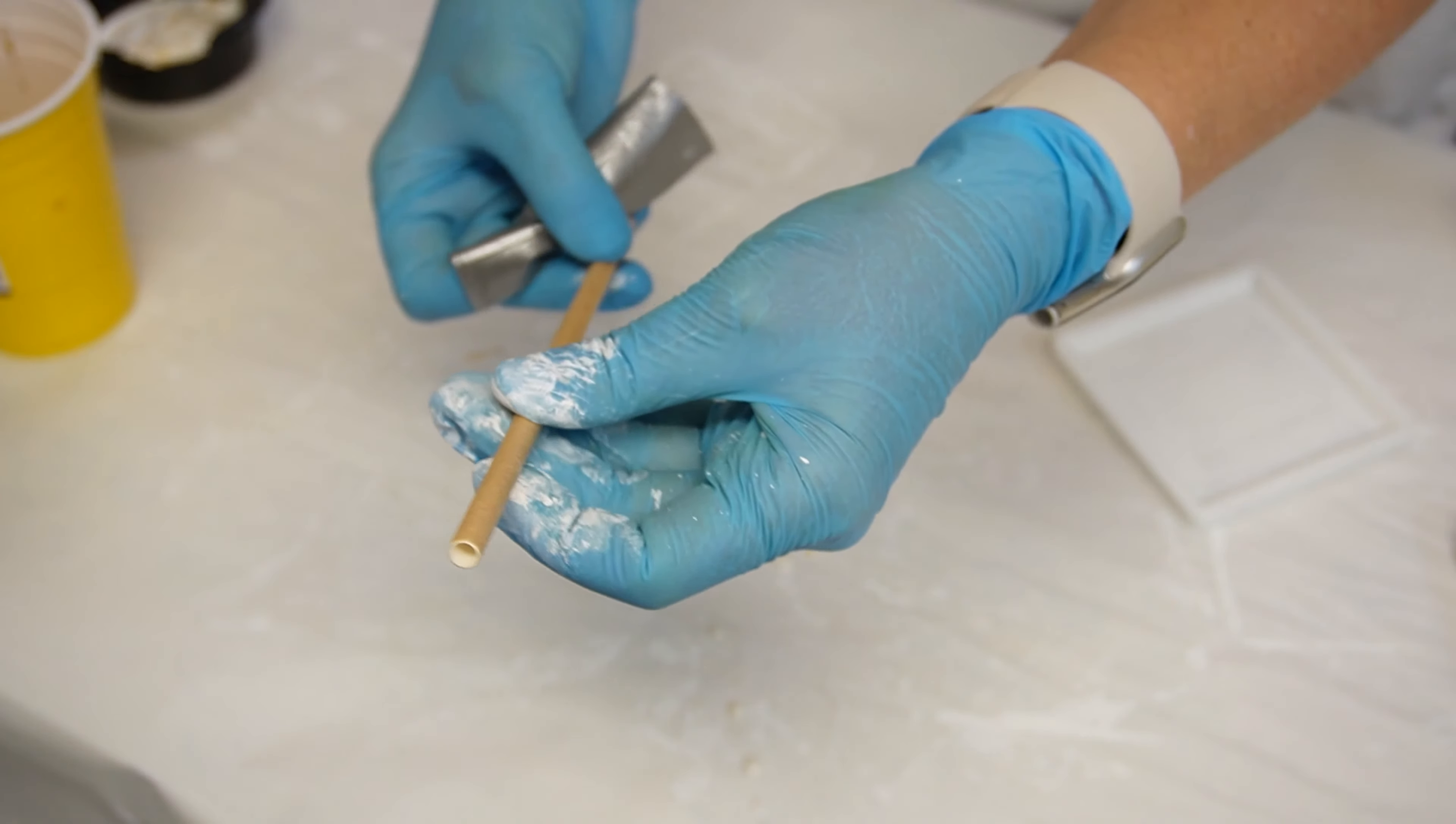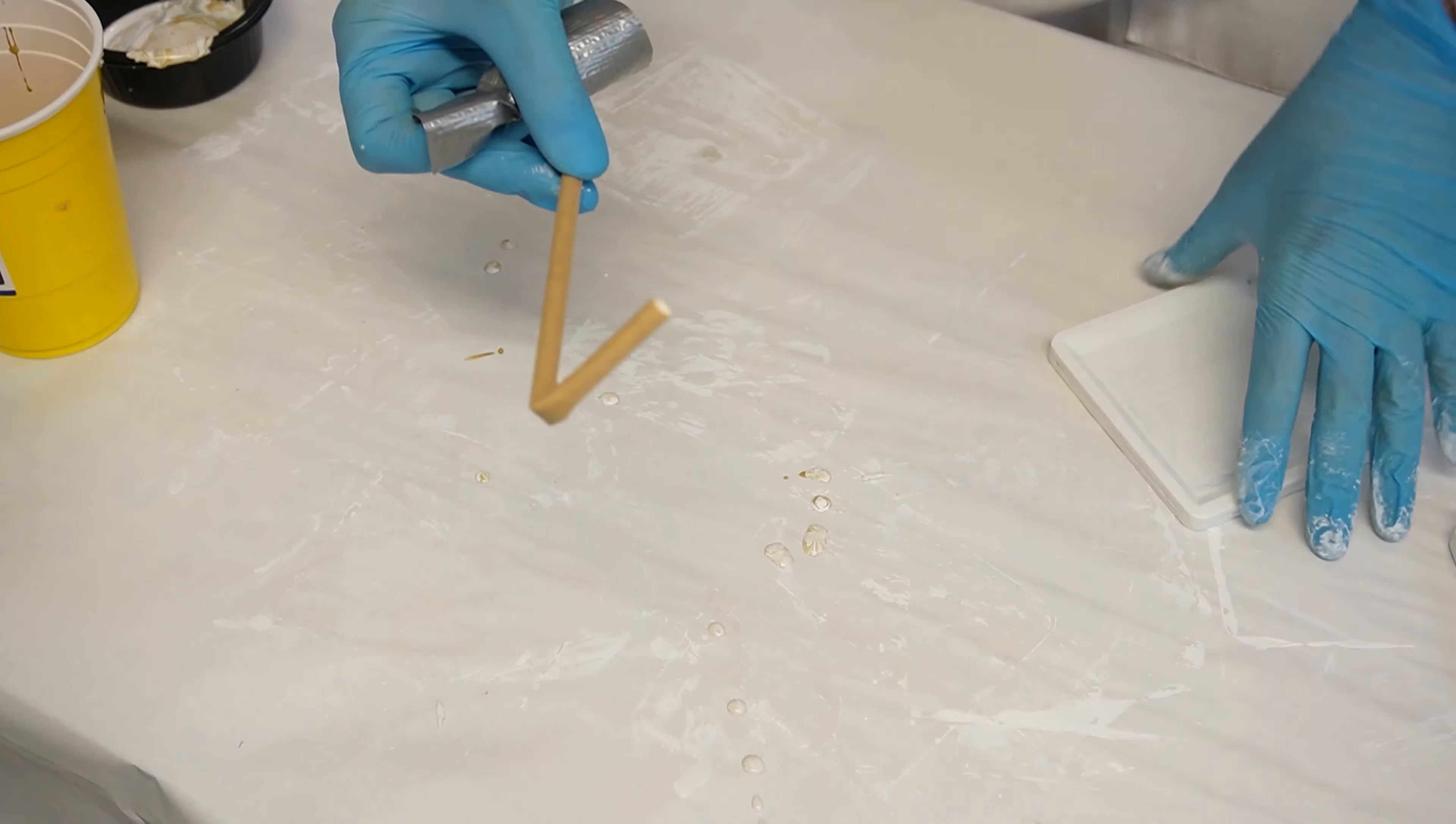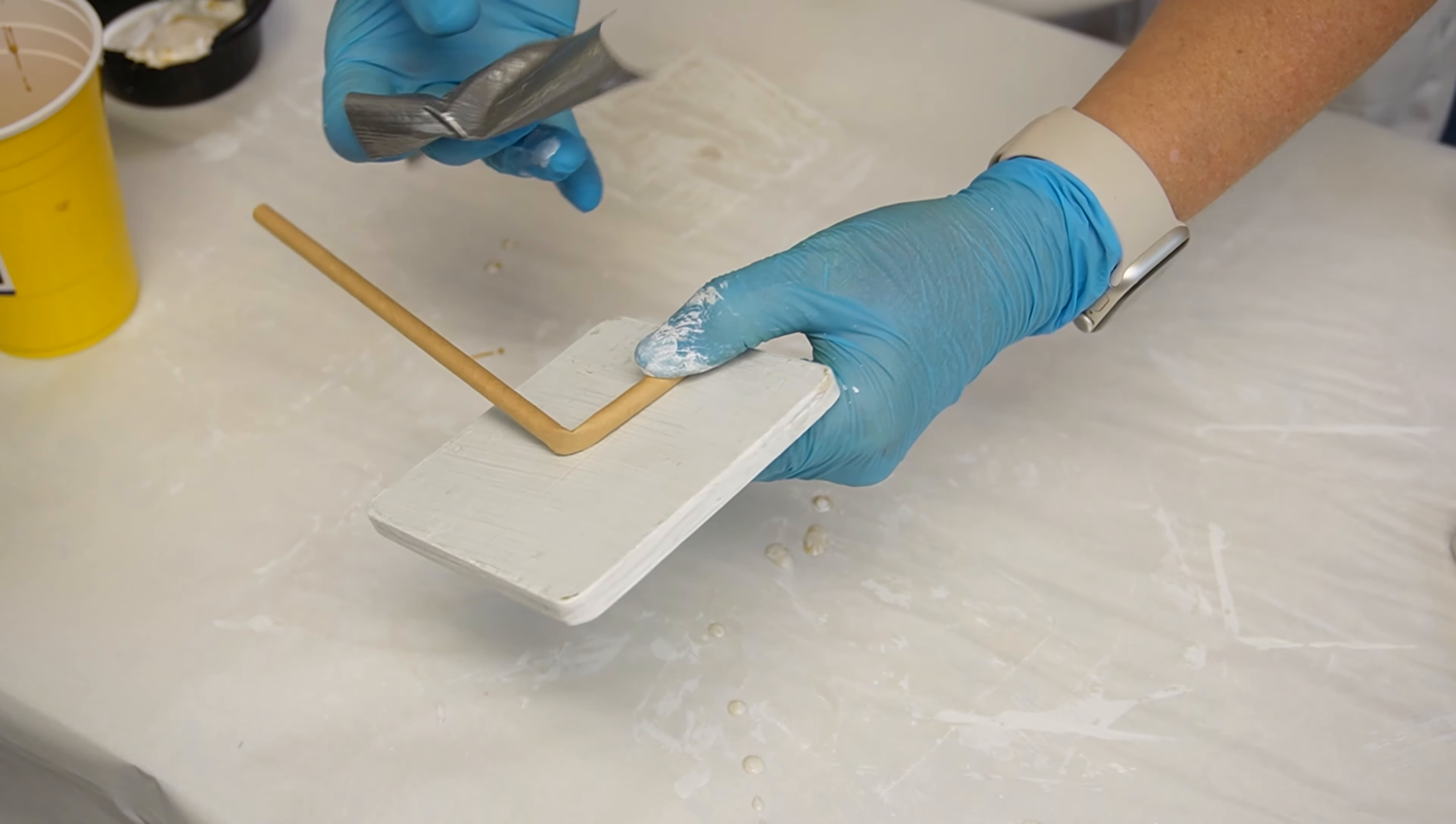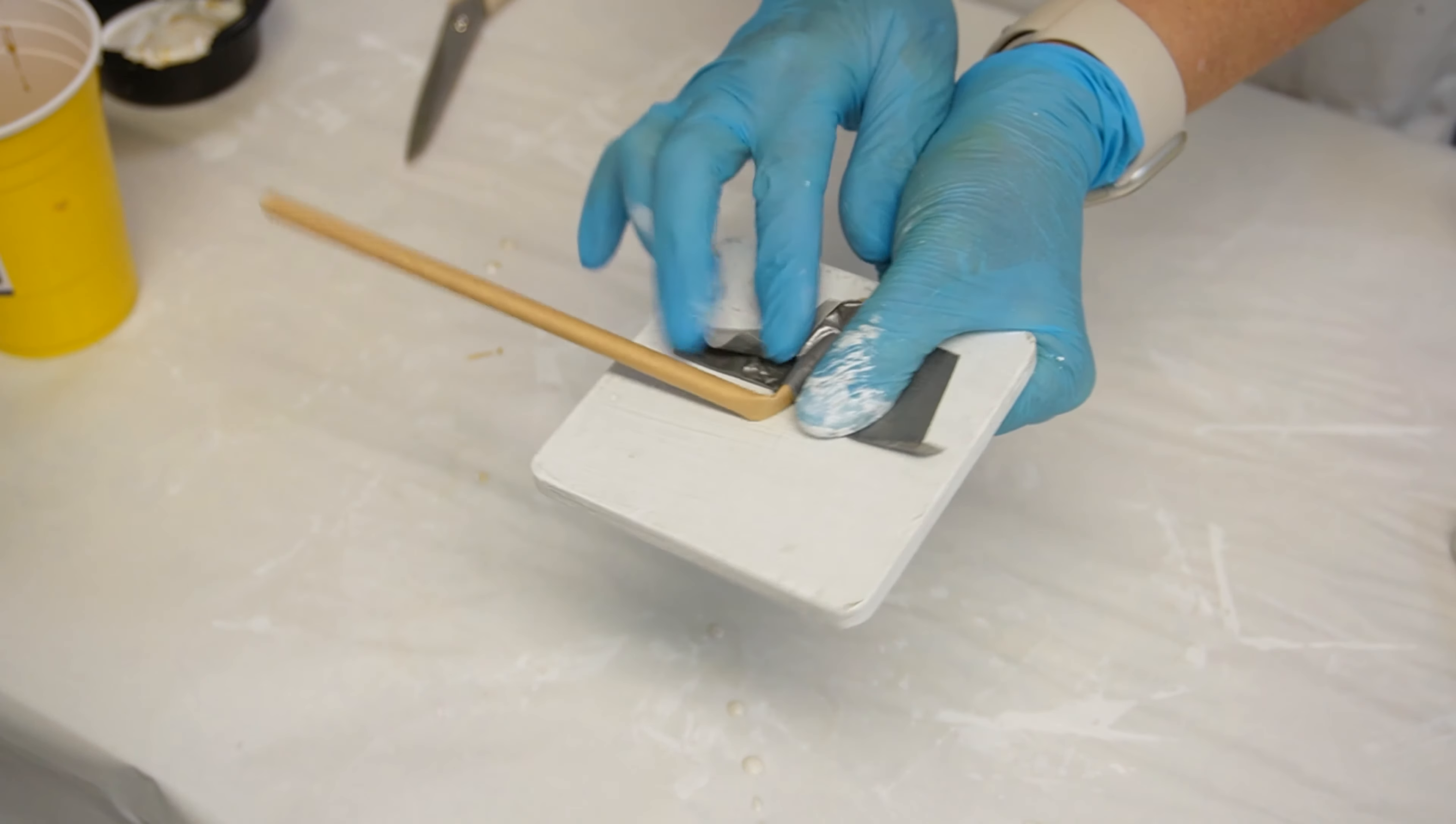As I mentioned, paint pouring is pretty messy. And if you have something to hold your project with, it makes things a whole lot easier. I didn't want to hold on to the sides of these coasters because then my fingerprints would kind of ruin the pour.